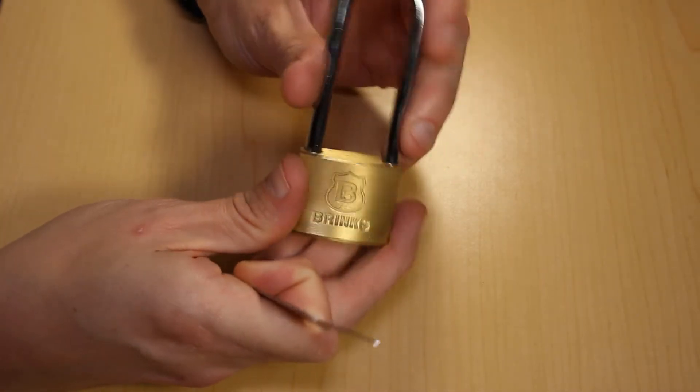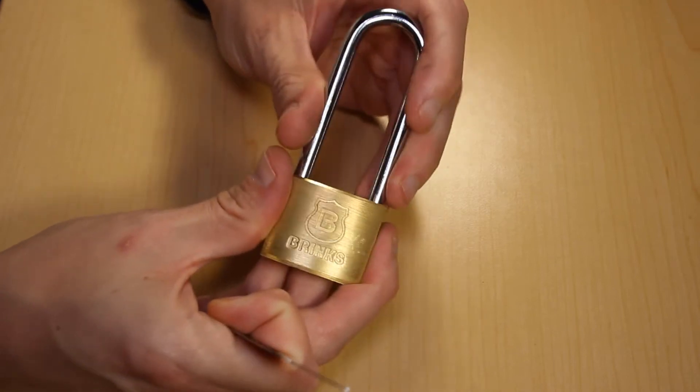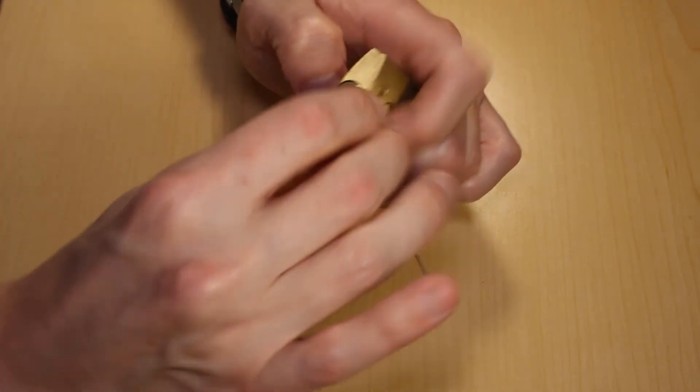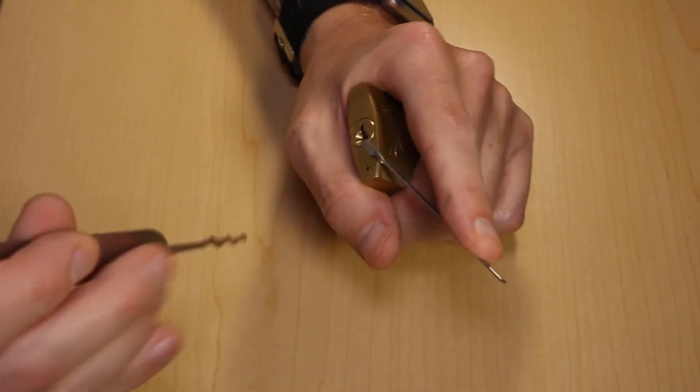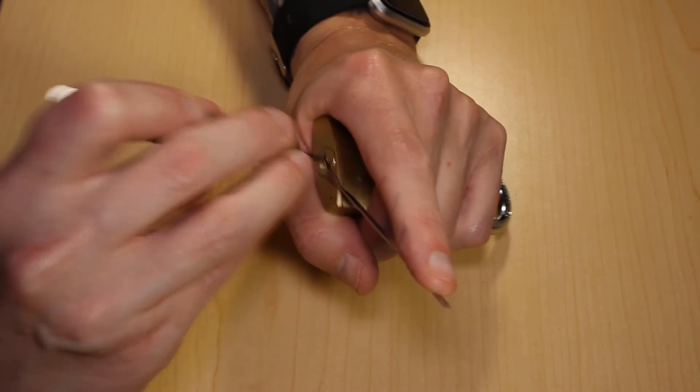So I have a Brinks lock here that I'm going to try and bust open with the octo rake just to give it a go so you guys can see how this thing works. So I'll put a little bit of tension in there. I'm going to start by giving this a nice little scrub.